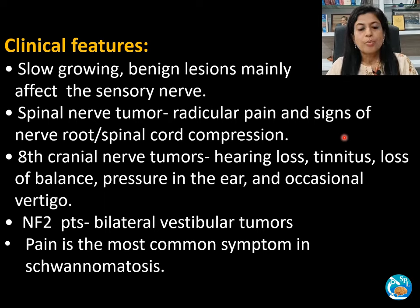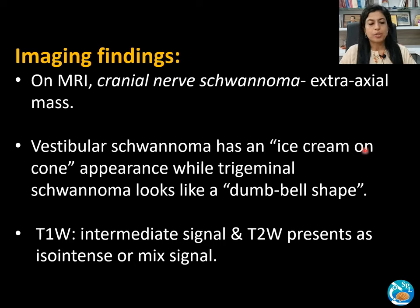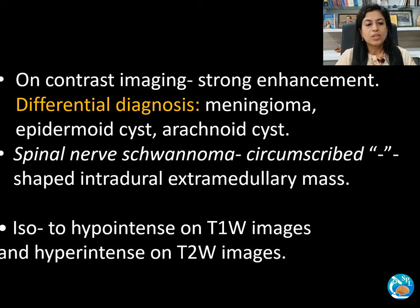Patients with NF2 present with bilateral vestibular tumors, and pain is the most common symptom in patients with schwannomatosis. On MRI, cranial nerve schwannomas present as extra-axial masses where a CSF-vascular cleft is present between the mass and the brain parenchyma, displacing the cortex. Intratumoral cysts and hemorrhages are less common. A vestibular schwannoma has an ice cream cone appearance, while the trigeminal schwannoma looks dumbbell-shaped. On T1-weighted images, cranial nerve schwannomas show intermediate signal, while on T2 they present as isointense or show mixed signal. Strong enhancement is noted on contrast images.